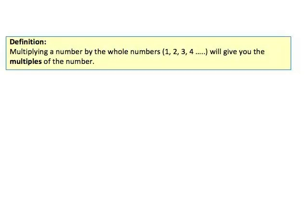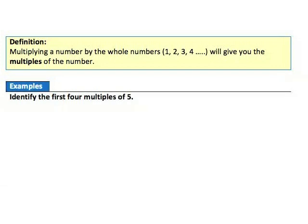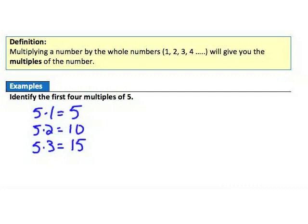Let's look at another definition. Multiplying a number by the whole numbers one, two, three, four, and so on will give you the multiples of the number. In the example, we need to identify the first four multiples of five. Five times one is five; five times two is ten; five times three is fifteen; five times four is twenty. So the first four multiples of five are five, ten, fifteen, and twenty.